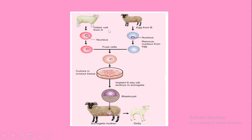Looking at the image, we can see the process simply. First, enucleation — the egg cell is fused with another cell that contains a nucleus. Then it is cultured in oviduct tissue. Next, the six-day-old embryo is implanted into a surrogate mother, and from this, Dolly was formed.